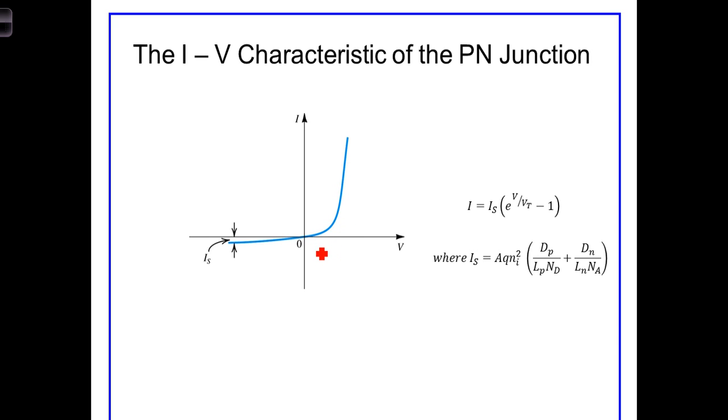Appreciable current begins to flow somewhere around 0.3 to 0.4 volts. And depending upon the diode, generally somewhere between 0.6 and 0.9 volts, the diode is in full conduction mode. LEDs frequently have a larger junction voltage and will require more than a volt to fully conduct.